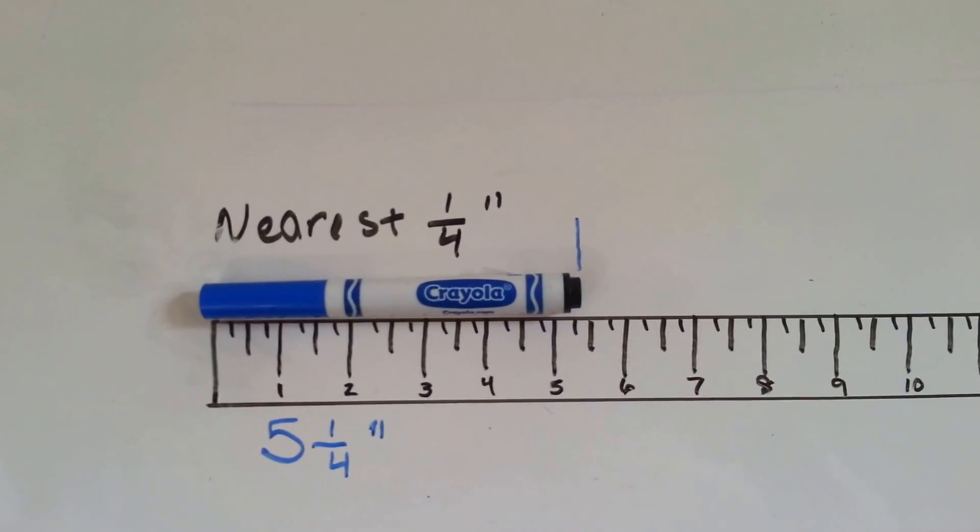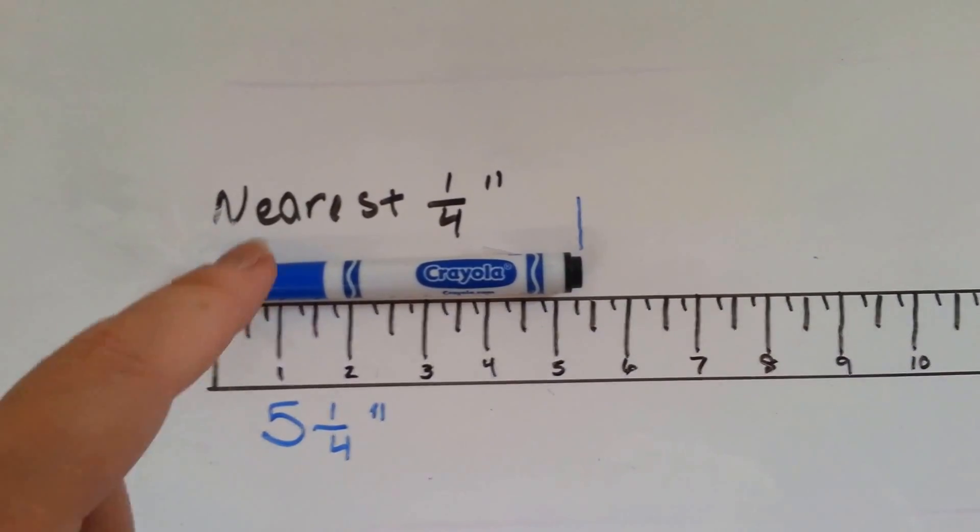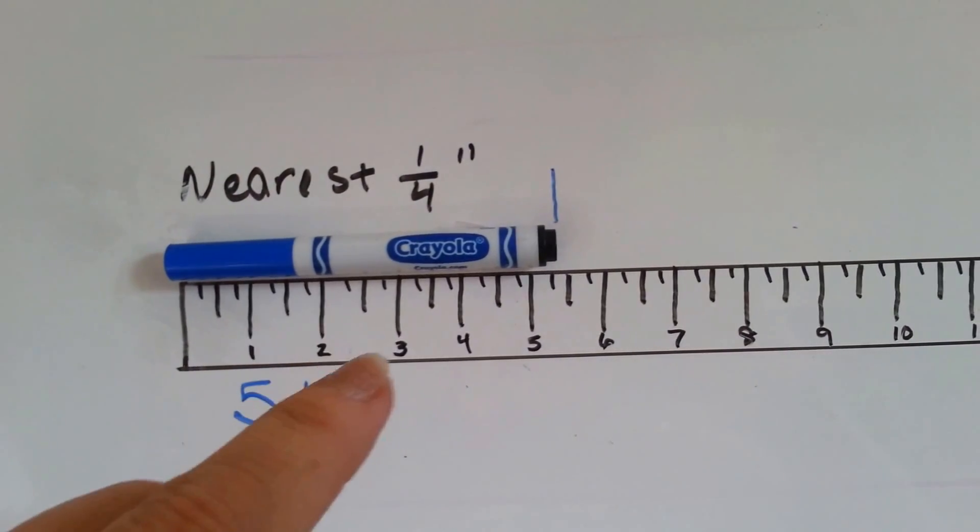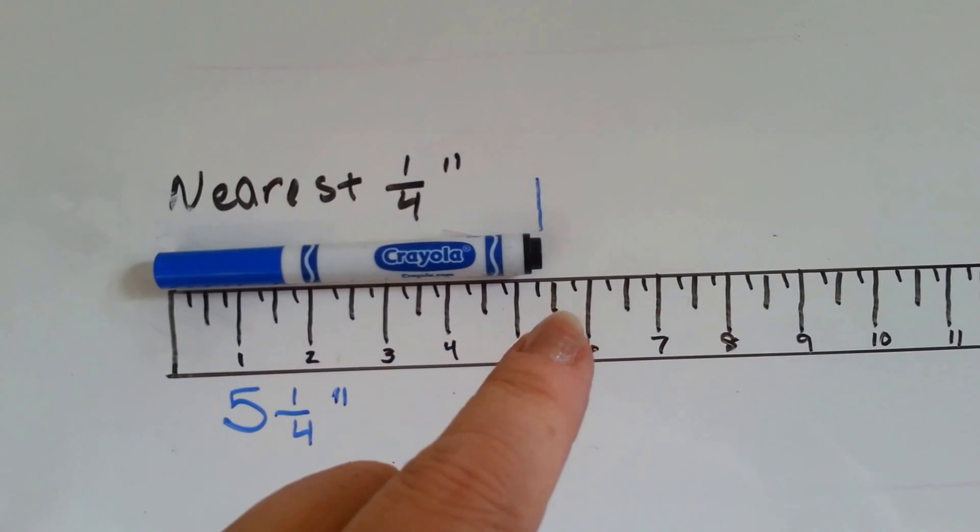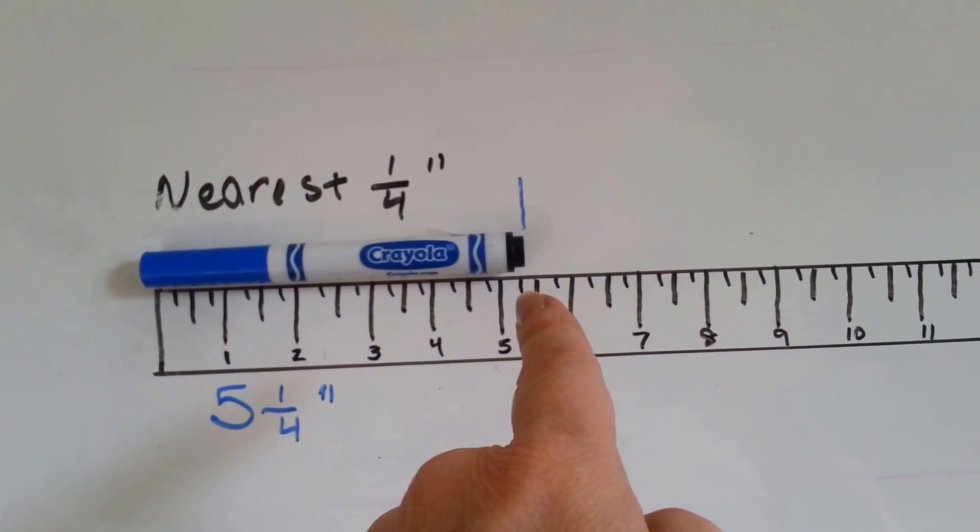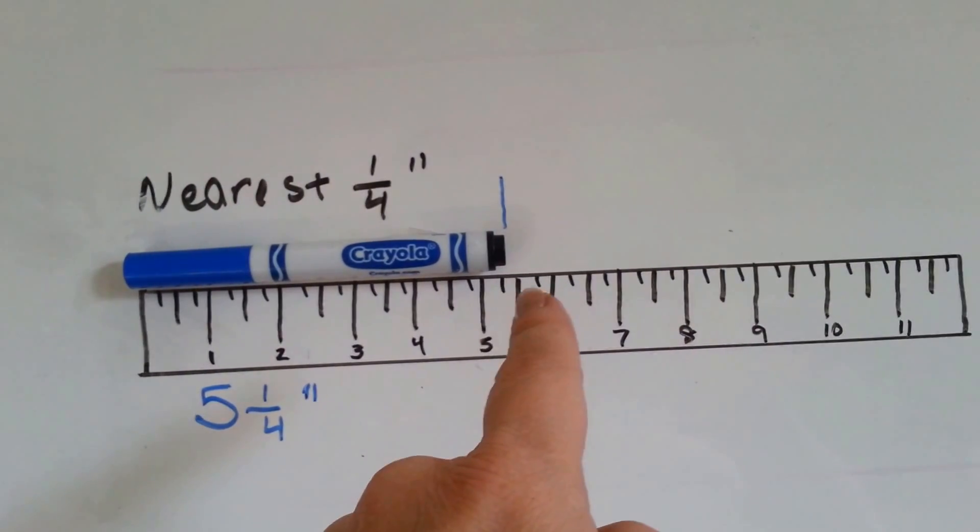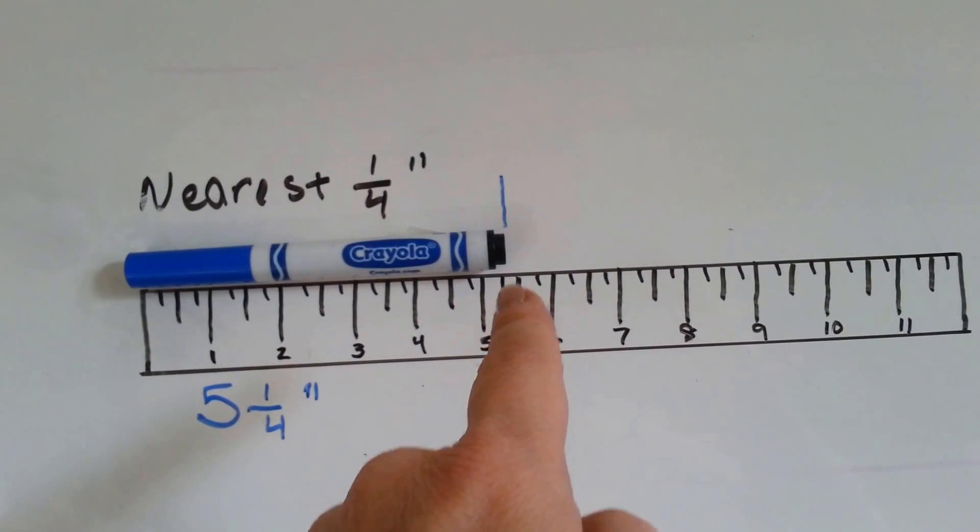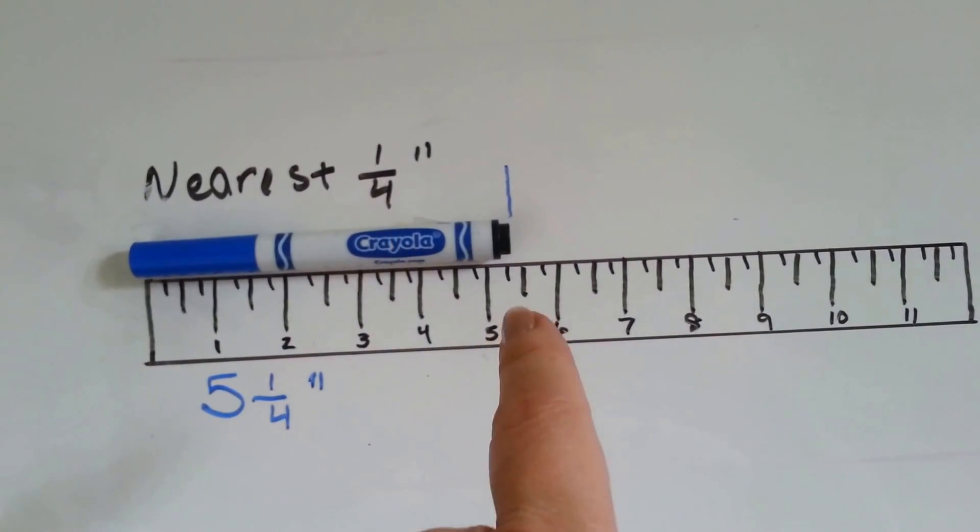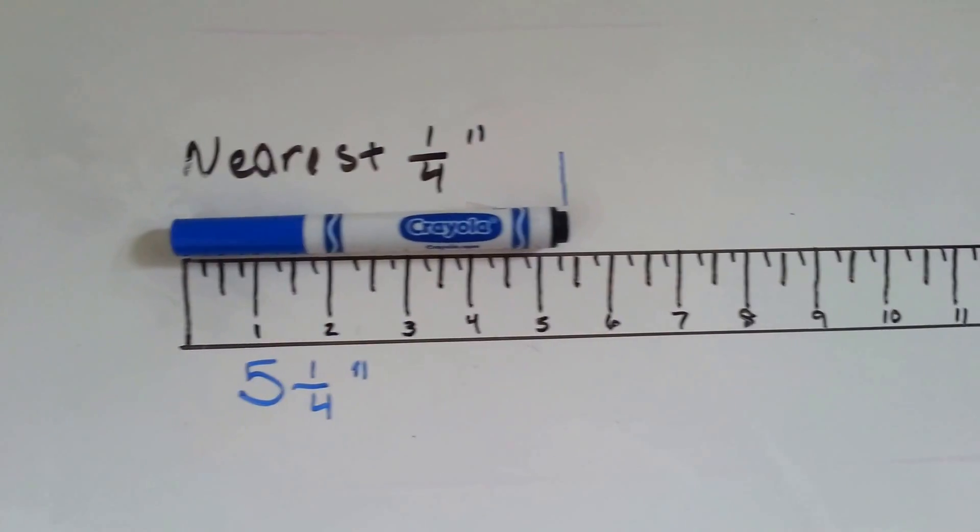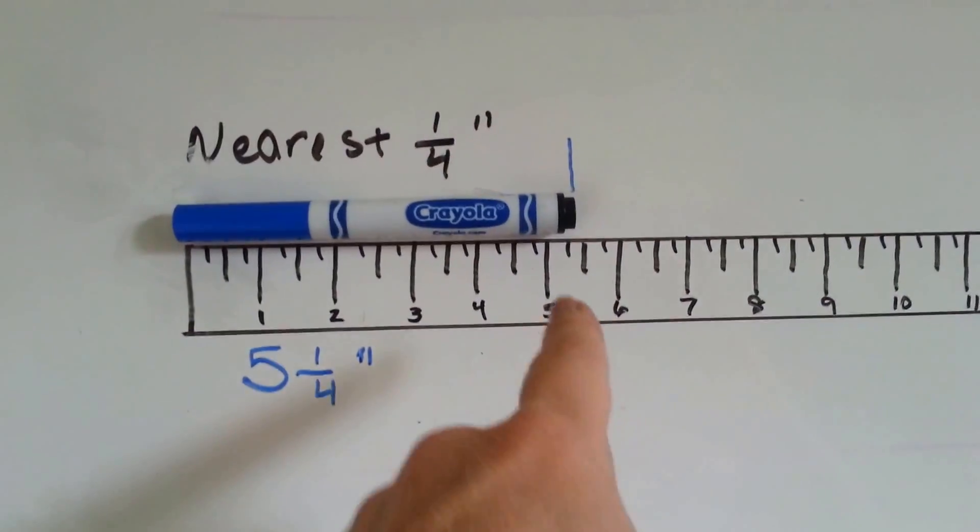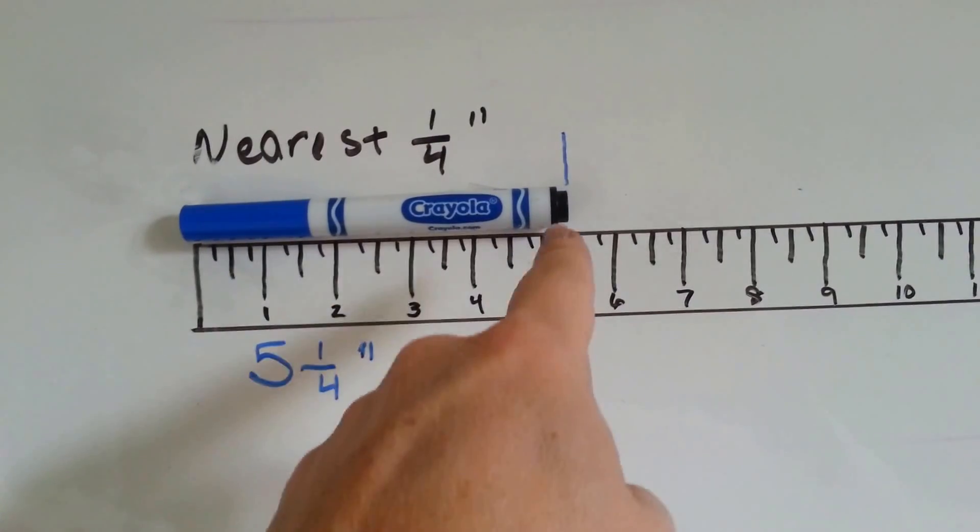Now I have a blue Crayola marker. If we were to measure it to the nearest fourth inch, we've got one inch, two, three, four inches, five inches. That's five and a half. We're not there yet. We're at five and one-fourth. Because in between the halves is the fourths. So this is five and one-fourth inch to the nearest fourth inch. You line it up here and then you line it up here and it's at five and one-fourth.